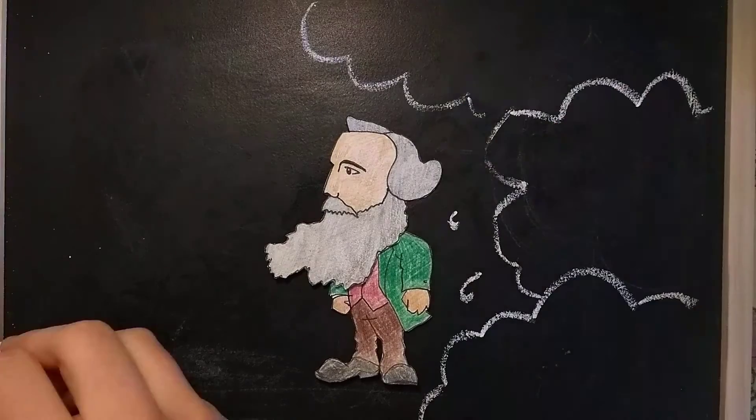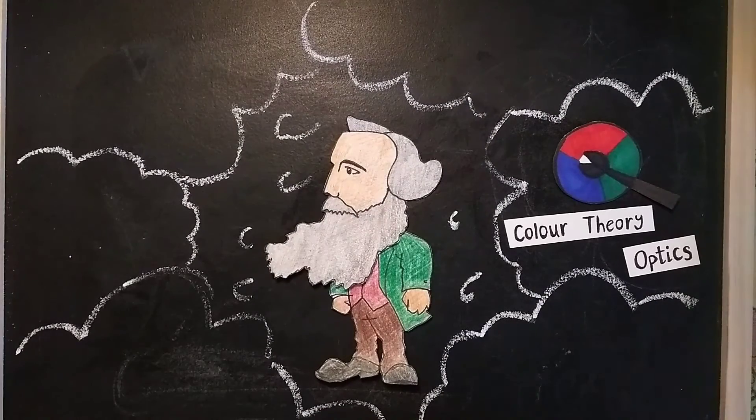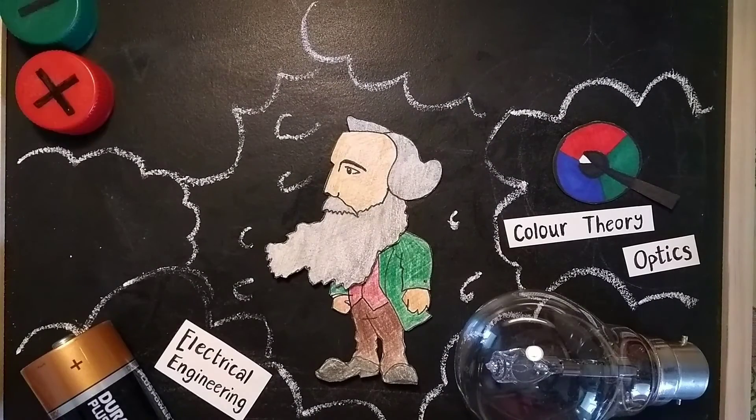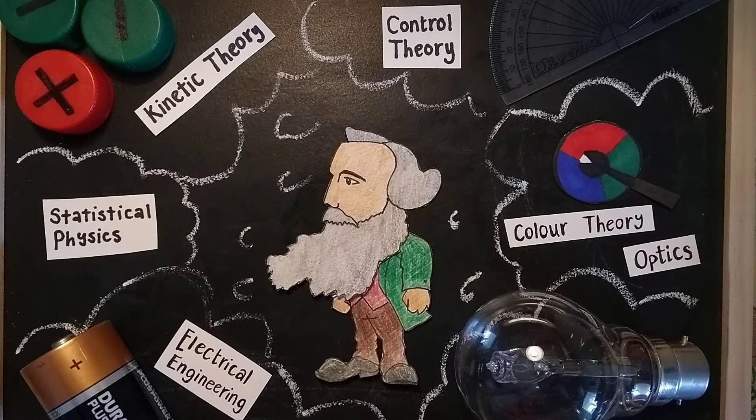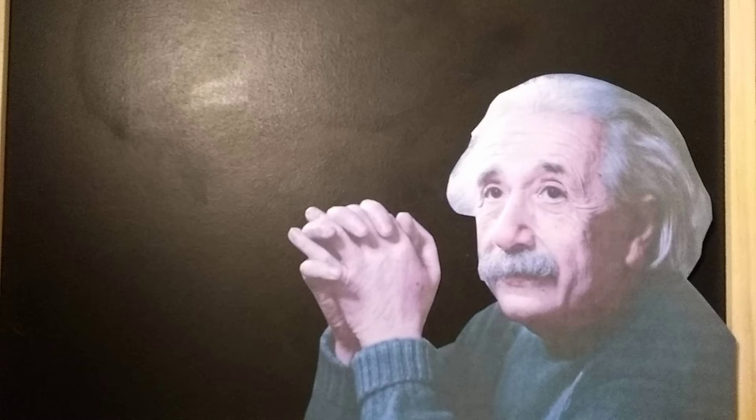Maxwell made many other significant contributions to science before he died in 1879, aged just 48. But his legacy laid the foundation for important future scientific discoveries, including Einstein's theory of relativity.